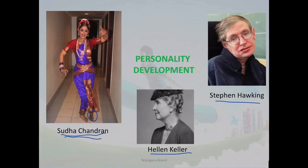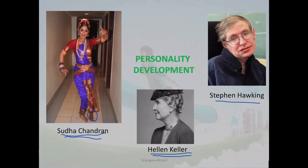Coming to Helen Keller — this lady was an American author, political activist, and lecturer. She was the first deaf and blind person to earn a Bachelor of Arts degree. She contracted an unknown illness that left her both deaf and blind. Despite that, she authored nearly 12 books and became a famous teacher in the world. At the age of 19 months old she lost her sight and became deaf. Even so, she did not stop and inspired many people, delivering many inspirational speeches.